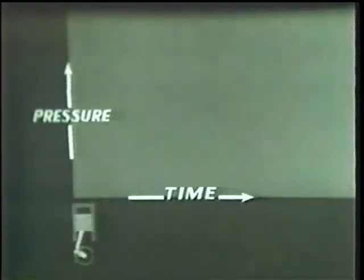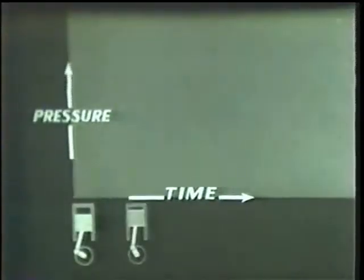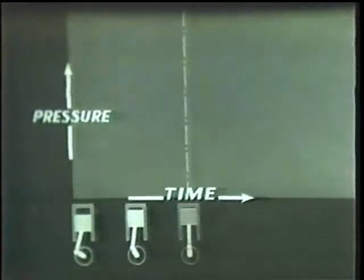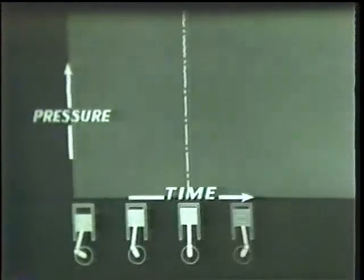Combustion can also be shown in the form of a graph. Pressure is indicated vertically. Time, horizontally — that is, the time required for those parts of the compression and power strokes shown here.